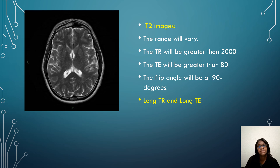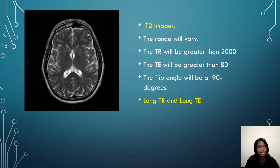For your T2 image, the range will vary depending on what facility you work at. The TR will be greater than 2000. The TE will be greater than 80. The flip angle will be at 90 degrees. It uses a long TR and a long TE.